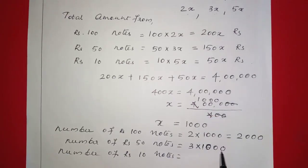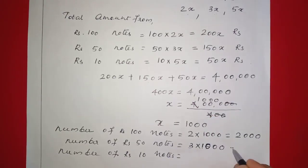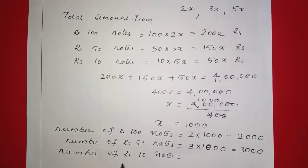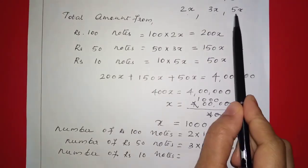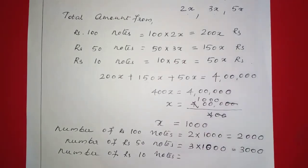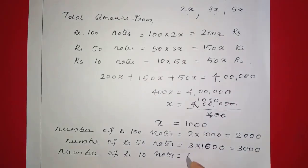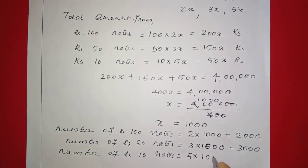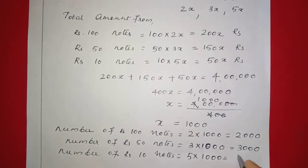The number of 100 rupee notes is 2x equals 2 into 1000 equals 2000 notes. The number of 50 rupee notes is 3x equals 3 into 1000 equals 3000. The number of 10 rupee notes is 5x equals 5 into 1000 equals 5000.